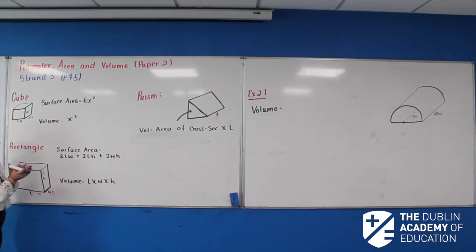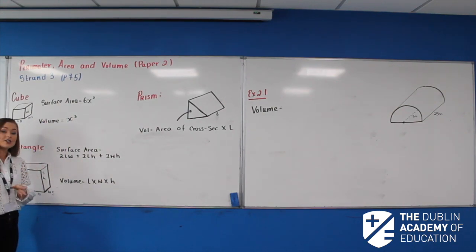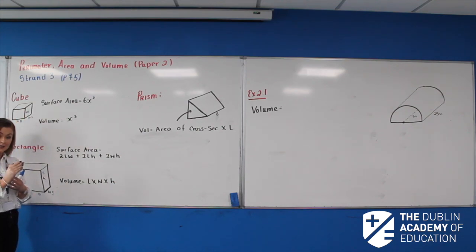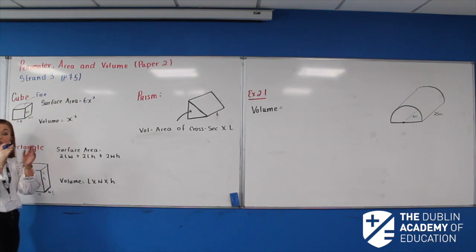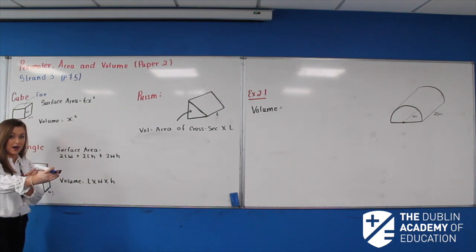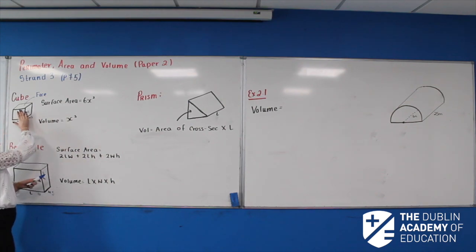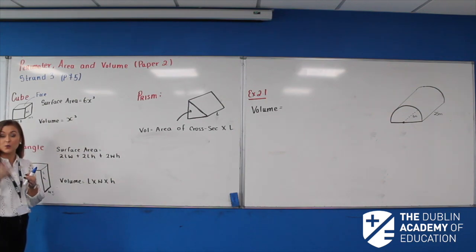For the cube, we're going to look at the surface area and the volume. The surface area is the sum of the areas of each face. By face, in this case it's a square. So it's the sum of each of those faces — that's the same for every single shape. The surface area is the area of every face, i.e. the part of the shape you can touch, all added together.